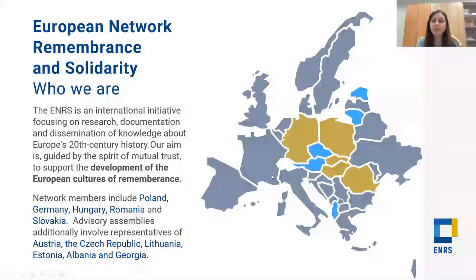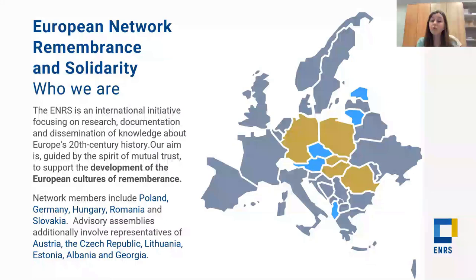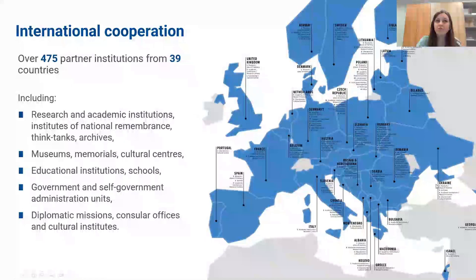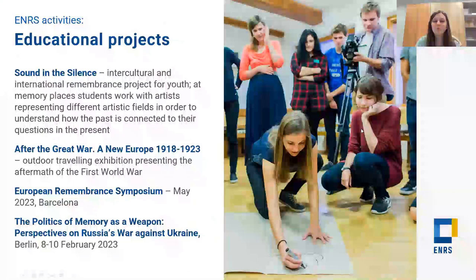Just a few words about the ENRS. This is a network of countries — members include Poland, Germany, Hungary, Romania, and Slovakia — with advisory assemblies from other countries marked in blue on the map. Our main goal is to develop European cultures of remembrance — not one culture, but different European cultures. You can also see partner institution countries on the map, so I hope you can find your country there.